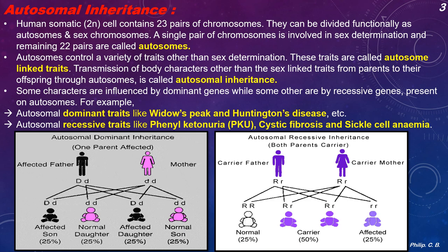Now, autosomal inheritance. The human somatic cell, which is diploid, contains 23 pairs of chromosomes. These can be divided functionally as autosomes and sex chromosomes — 22 pairs are autosomes and a single pair of sex chromosomes. The sex chromosome pair is involved in sex determination, while the remaining 22 pairs are called autosomes. Autosomes control a variety of traits other than sex determination, called autosome-linked traits. The transmission of body characters through autosomes from parents to offspring is called autosomal inheritance.